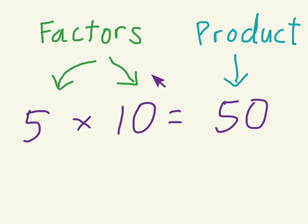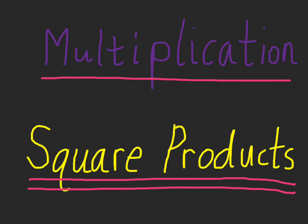So these are two words you should remember: factors and product for multiplication.